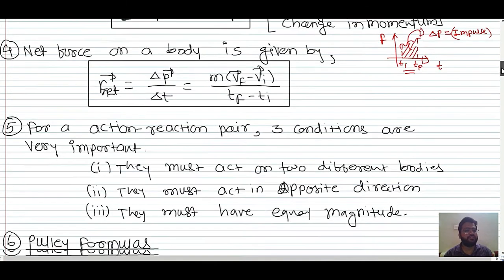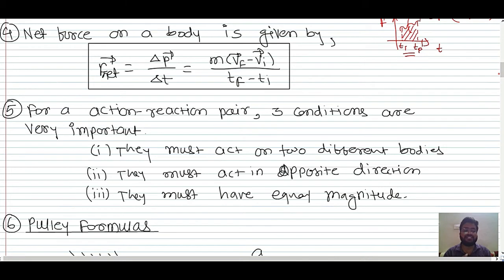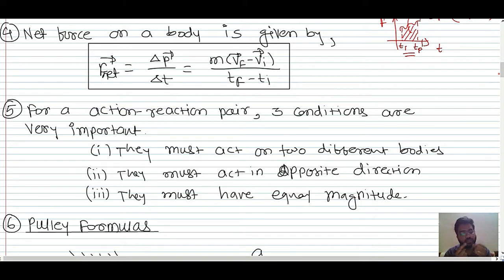Newton's Second Law states that the rate of change of momentum is directly proportional to the external unbalanced force. While the First Law says a body stays at rest or in motion without force, the Second Law says applying a force causes a change in momentum. Net force = (mv_final − mv_initial) / (t_final − t_initial).